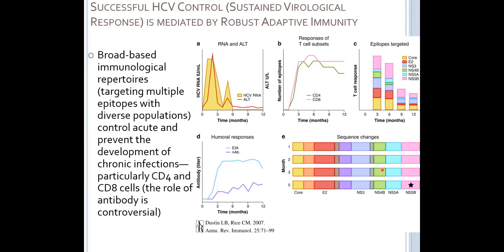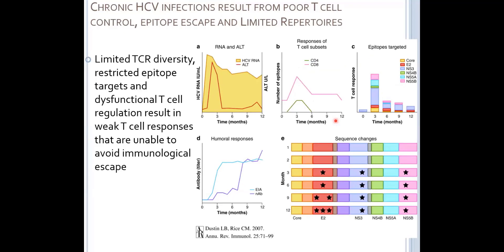This is a really key figure — the number of mutations that occur in the virus over time. At five months, one mutation has occurred in NS5B, which is one of the proteins targeted by the T cell response. Presumably this was an escape mutation where the virus mutated so it could no longer be targeted by this T cell response. But because you had so many other targets of the T cell response, the virus was still controlled by the CD4 and CD8 T cell response. That's what a good response looks like — this person spontaneously cleared infection and no longer needed treatment.